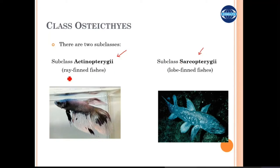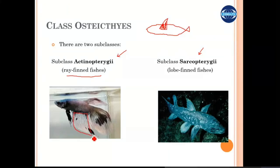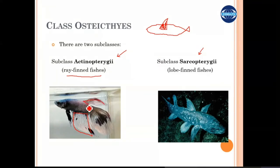Actinopterygii are the ray-finned fish, in which the fins are not in the form of an appendage or girdle. These fins have a wide base, and here you can see the fins are wider — they are like parallel bones coming out of the body making the fin. So these are called the ray-finned fish.